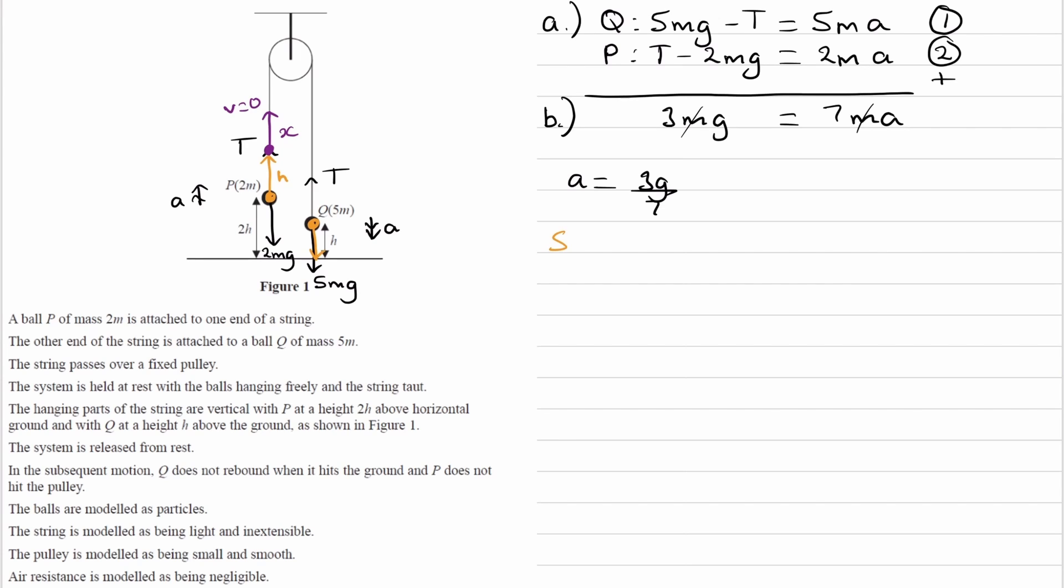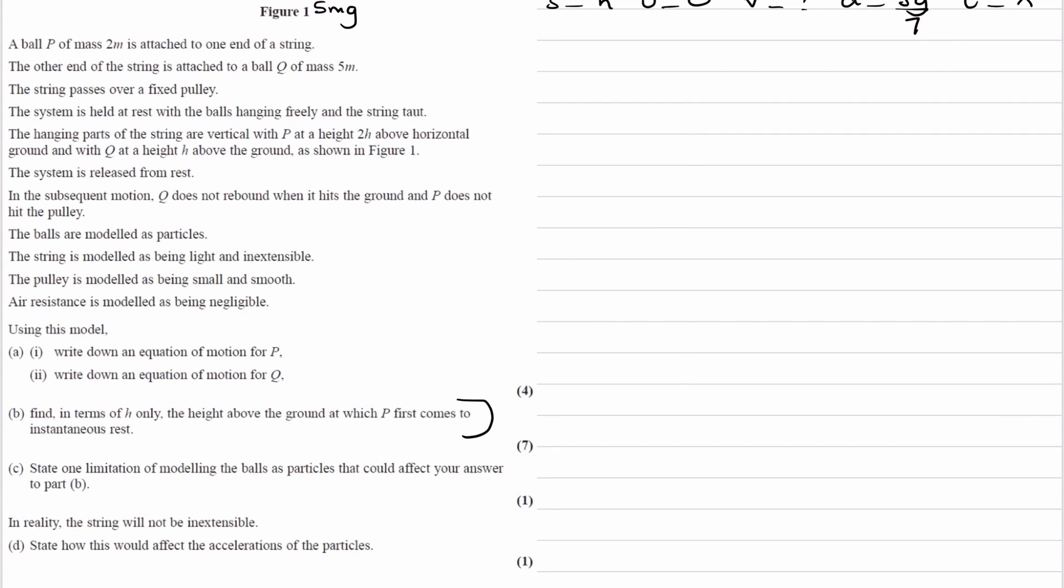So for stage one, let's write out all that we know, all of our SUVAT quantities. So we know that the distance traveled is going to be H. So I'm looking at P here. P travels a distance of H upwards. The initial speed is zero. As we're told in the question, the system is released from rest. The final speed, we don't know. And the final speed of stage one would be the initial speed for stage two. So we want to work out what that speed will be. The acceleration is 3G over 7. And the time, we don't know, and we're not interested in time. We just want to work out distance.